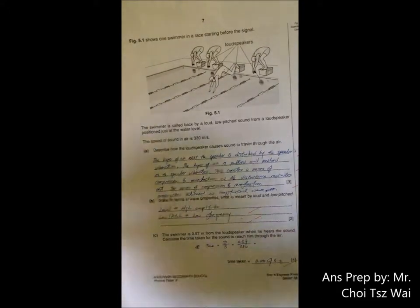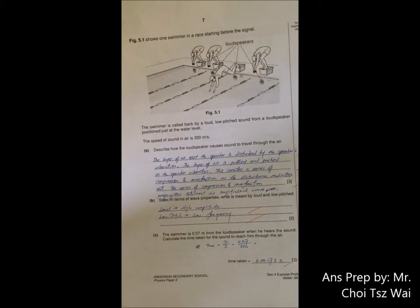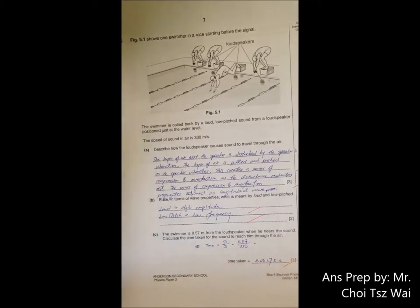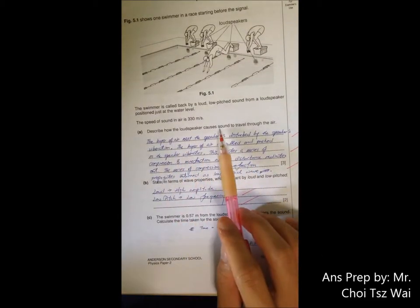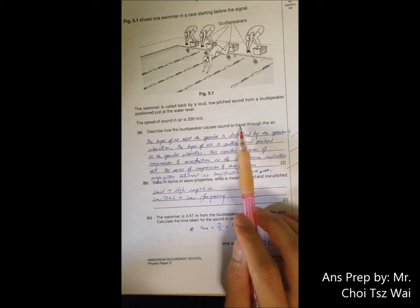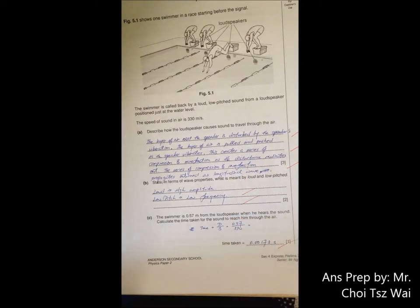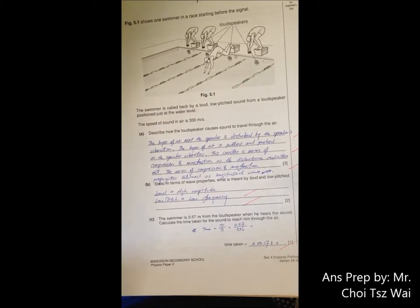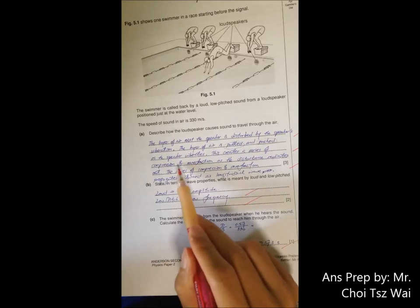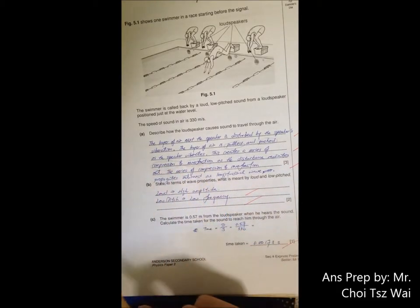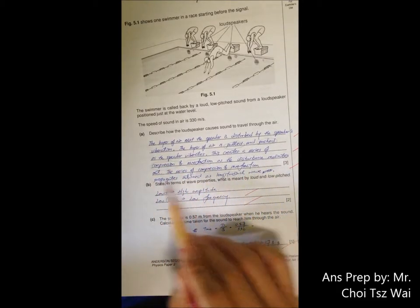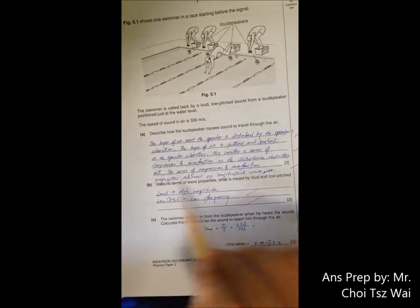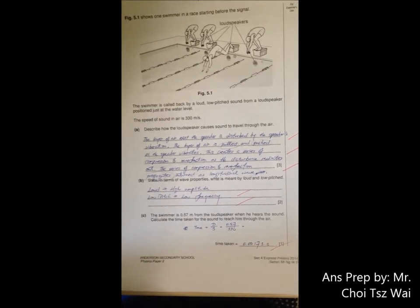Let me switch on the loop. Describe how the loudspeaker travels through air. This is very standard question, but you need to include certain keywords. The keywords are pull and push, compression, rarefaction, propagation, and longitudinal wave. Once you have these few keywords, your answer will be complete.